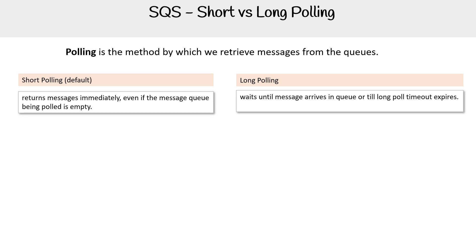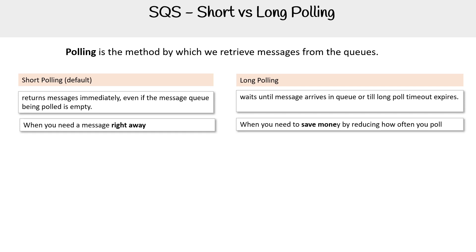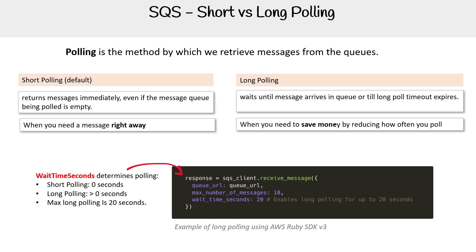You use short polling when you need a message right away. You use long polling when you need to save money by reducing how often you poll. The way you set this is by setting the wait time seconds.